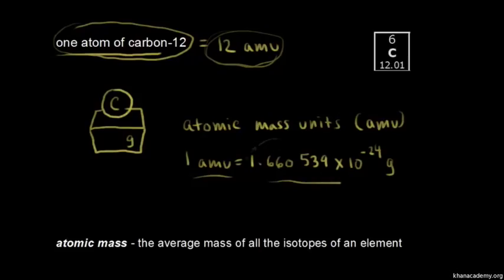And so if you multiply this number on the right by 12, you'll get the mass of one atom of carbon-12 in grams. But once again, that number is kind of annoying. It's kind of small. And so it's easier to use this definition of one atom of carbon-12 has a mass of 12 AMUs.